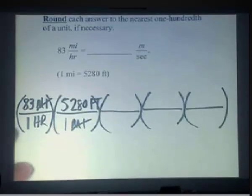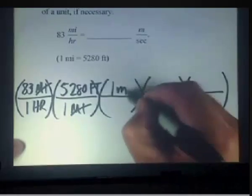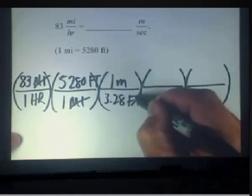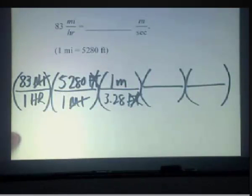Now let's make the jump from feet to meters. We know that in one meter, we have 3.28 feet. This will then get our feet to cancel out, as we want here.